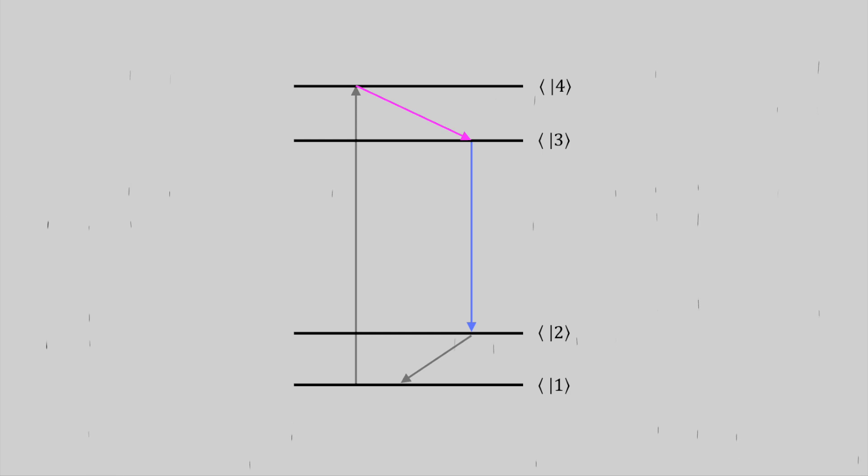In a four-level laser crystal, we now use pump light to excite the electrons from the ground state one to the highest state four. Now state four electrons rapidly de-excite to state three, which again is metastable and has a longer lifetime. The laser transition is now from state three to state two. And here's the trick. State two is super short-lived.